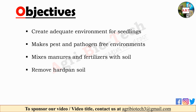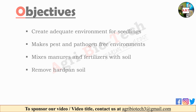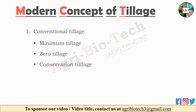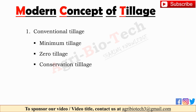The main aim of tillage is to produce a good soil condition or tilth for crop establishment and initial shoot and root development. Now let's see some modern concepts of tillage. These are conventional tillage, minimum tillage, zero tillage, and conservation tillage.